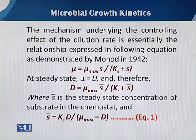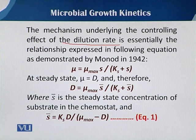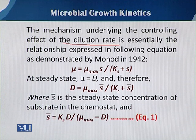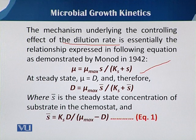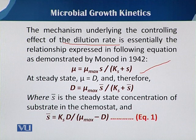The mechanism underlying the controlling effect of the dilution rate is essentially the relationship expressed by the Monod equation of 1942. As we have seen in our previous kinetics modules, the Monod equation is: mu equals mu_max times S, over Ks plus S. Here, mu_max is the maximum specific growth rate and Ks is the substrate utilization constant — these two parameters are known as the Monod parameters.